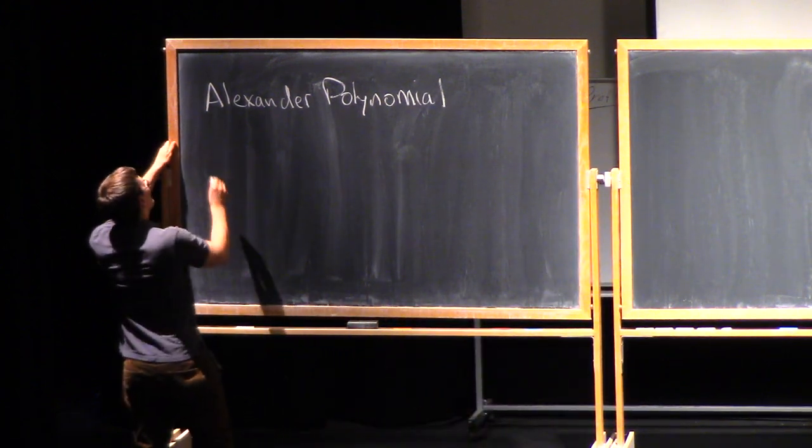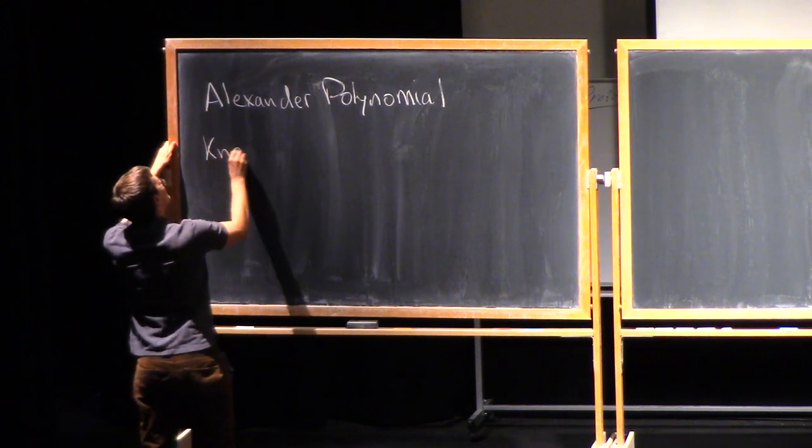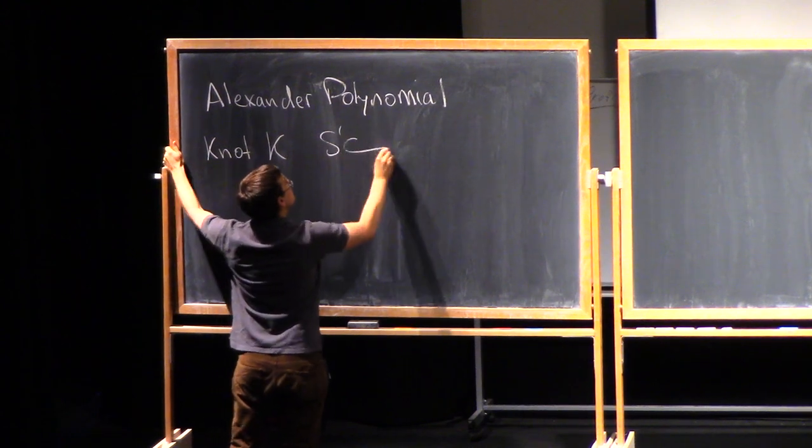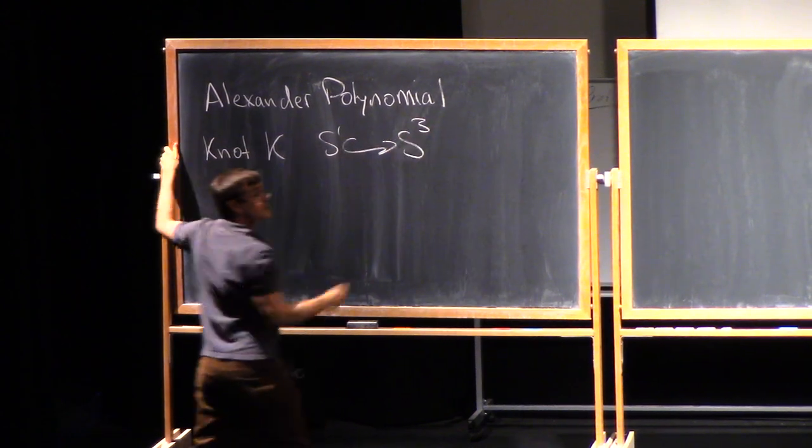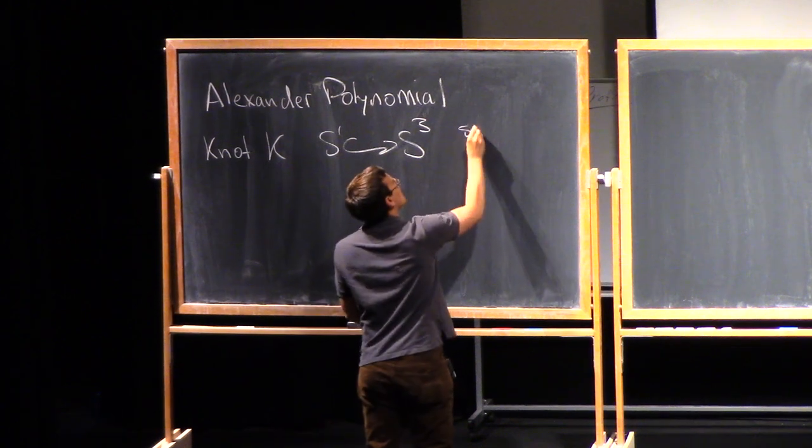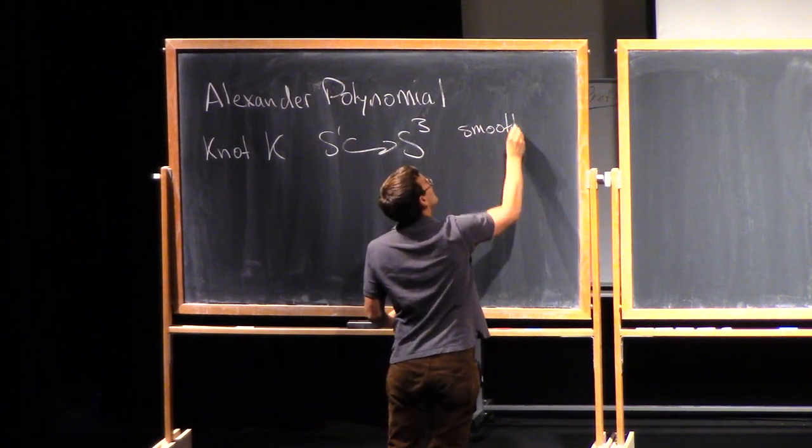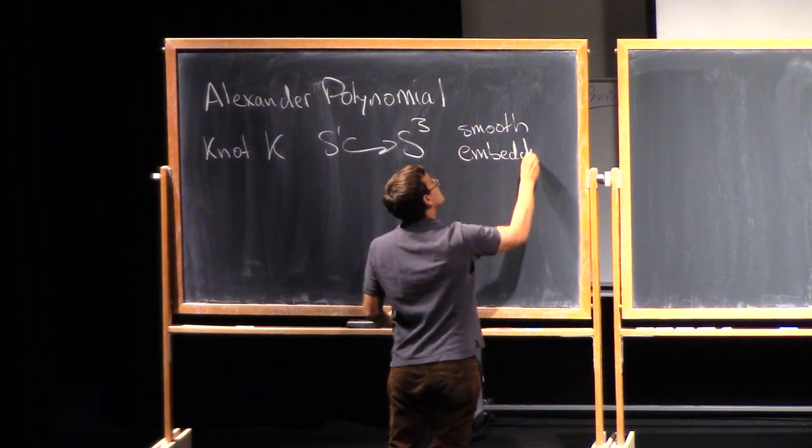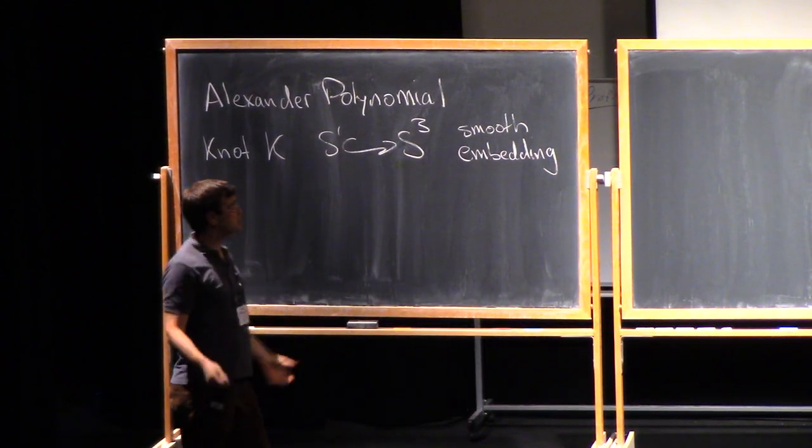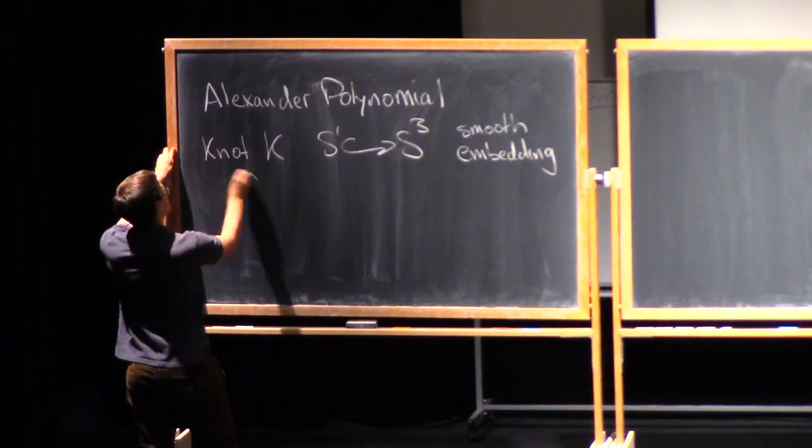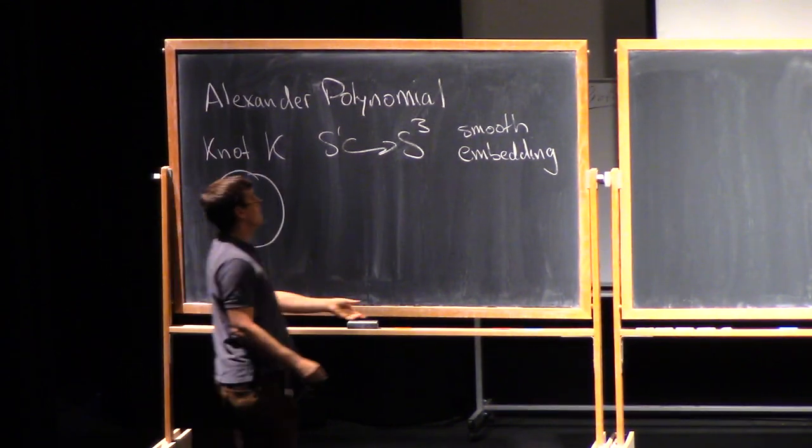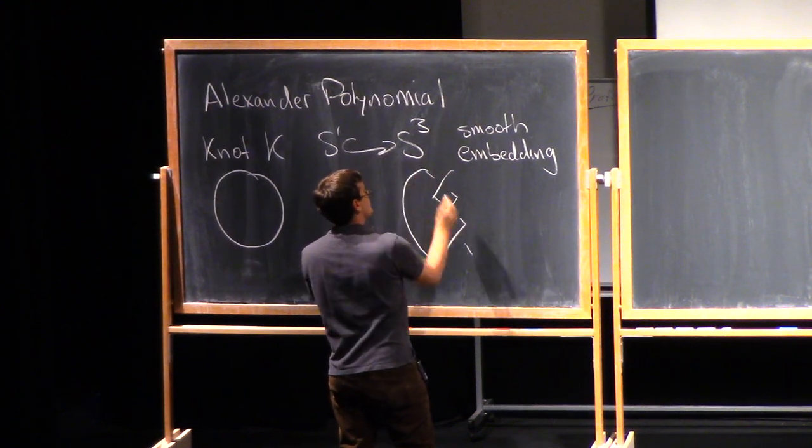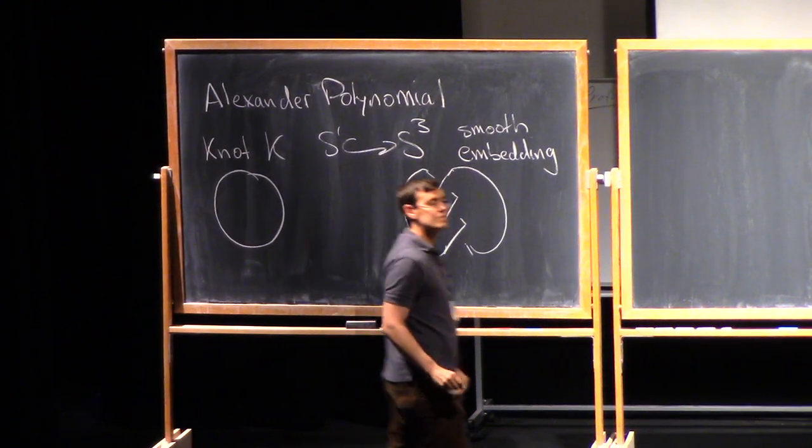Okay, but first, let's start basic. So what's a knot? So a knot is a smooth embedding of S1 into S3. And usually we draw pictures of knots by projecting them on the plane of the blackboard. So here's a knot called the unknot. There's another knot called the trefoil knot.